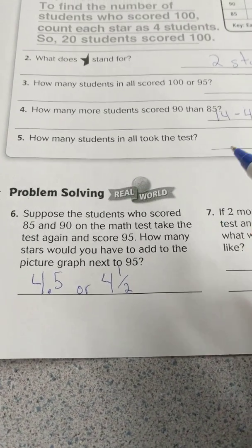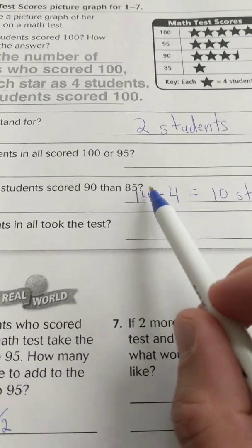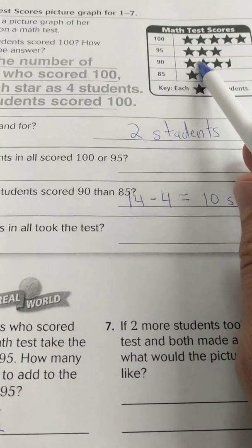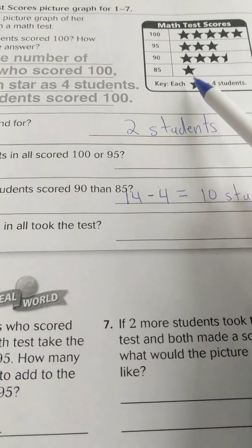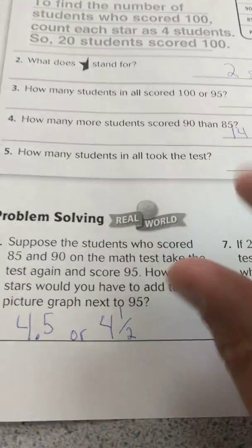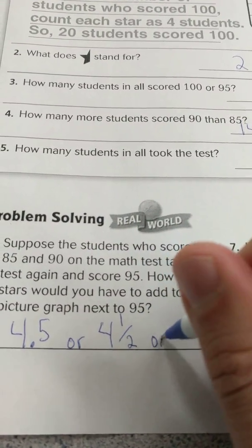Or, as we said before, that would be 18 students, because we had 14 from 90, and 4 from 85, so that would equal 18 students.